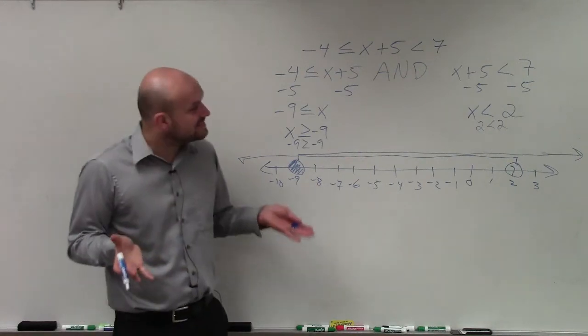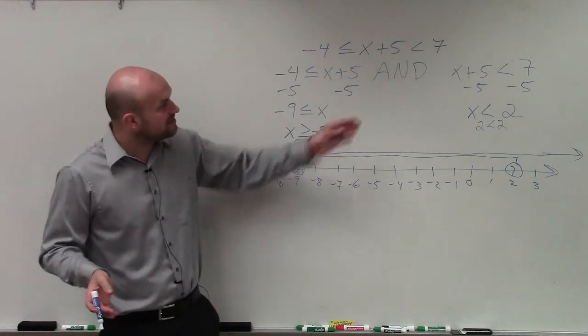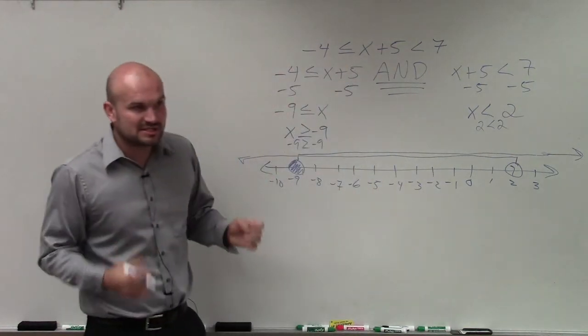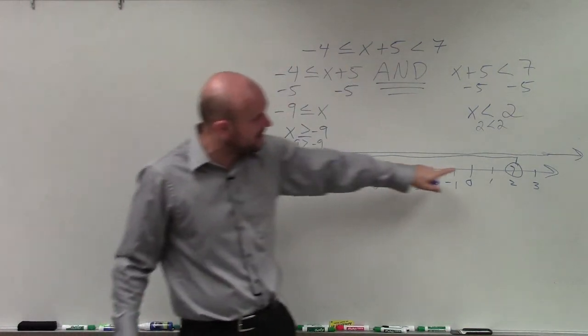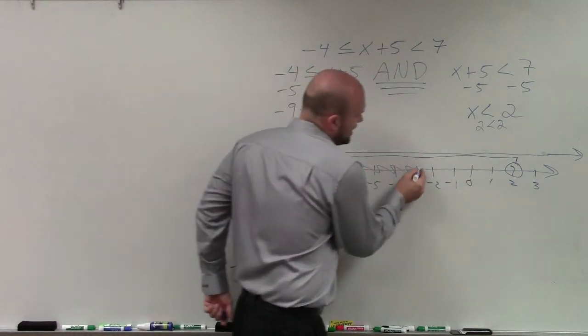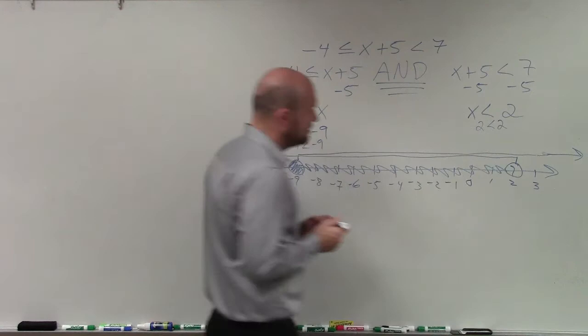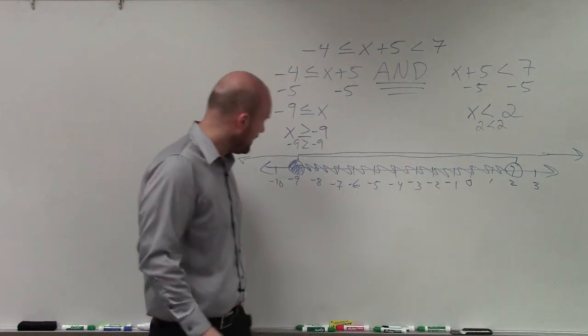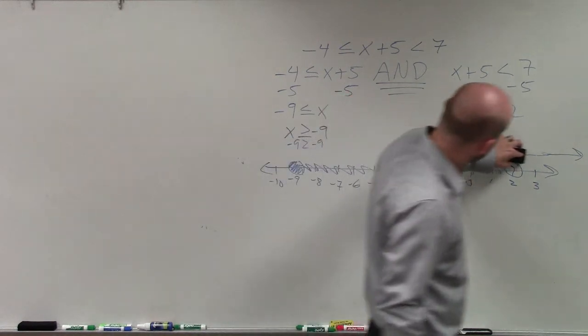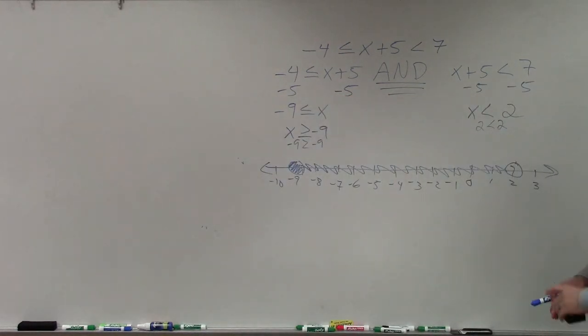So what you guys can see is, remember, since I'm dealing with an and, I only care about the intersection, which you guys can see is between the points negative 9 and 2. So in graphing, I'm going to shade all the points in between. And then we don't really need this up there. And that's your final answer. OK? Yes? No? Maybe so? OK.